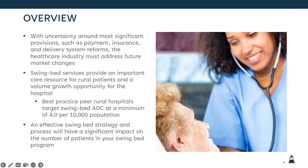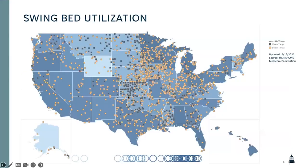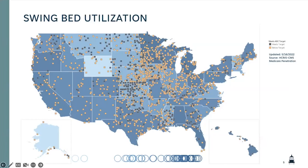Really the swing bed program is the bread and butter for our critical access hospitals, and there is lots of opportunity out there. You can see from this chart here — updated back in 2022 with Medicare cost report data — really showing swing bed utilization and how underutilized swing bed programs are in critical access hospitals relative to a target ADC of four per 10,000 population. So if your service area population is 20,000 people, you should target an ADC of eight in your swing bed program. Utilization across the U.S. in swing bed programs for critical access hospitals is certainly varied, but there's lots of opportunity for growth.